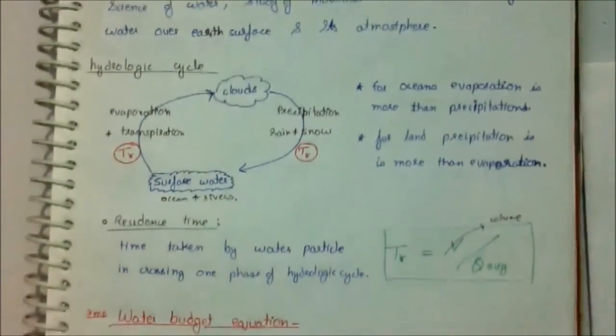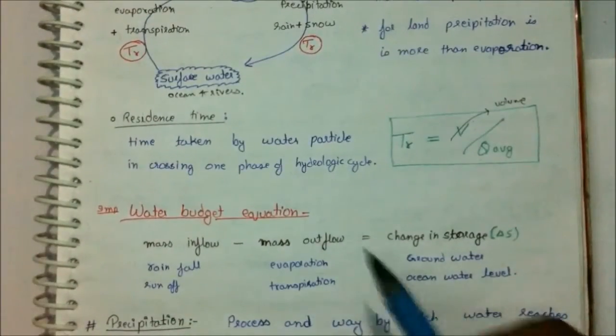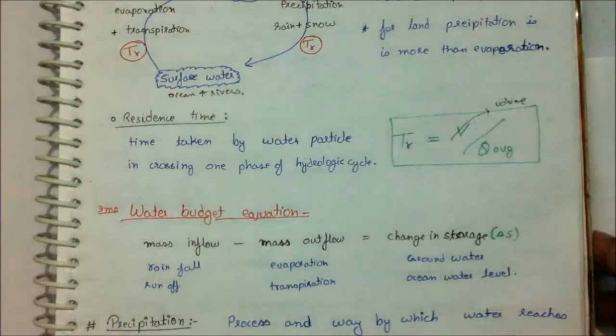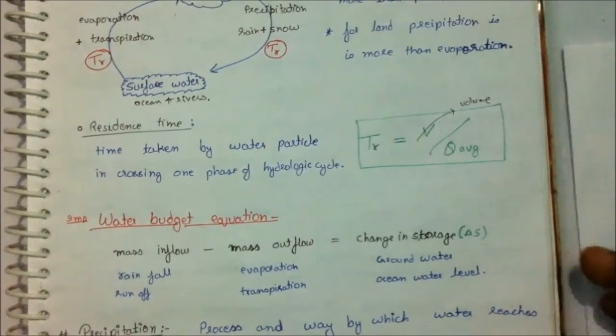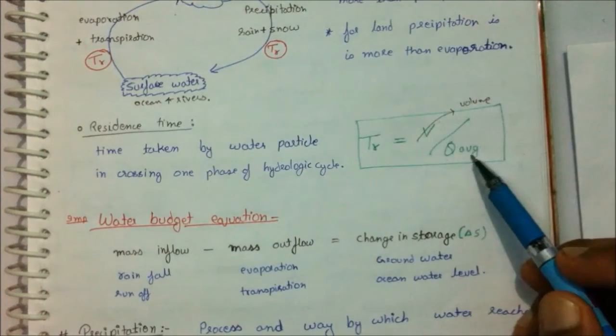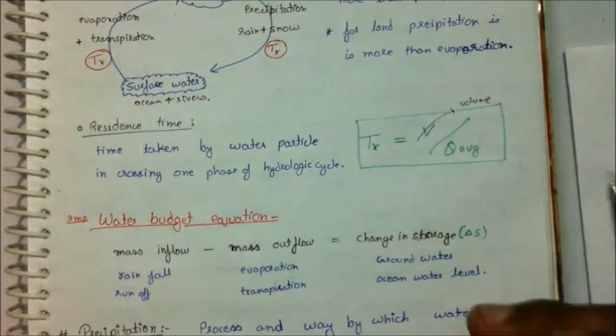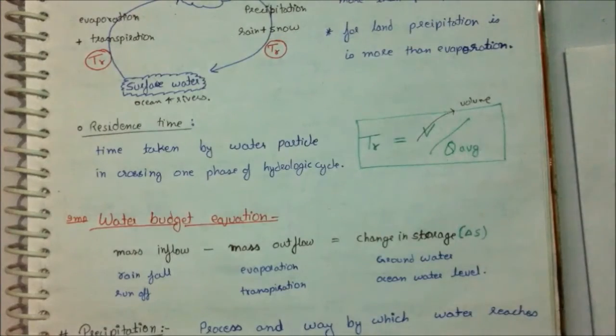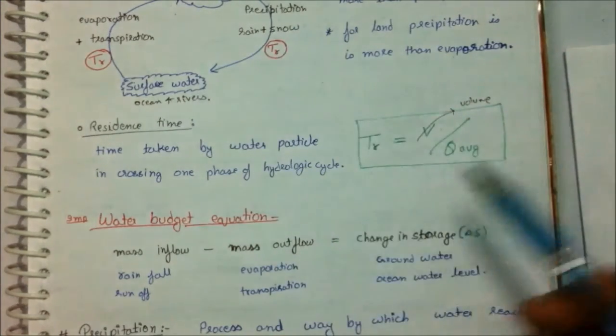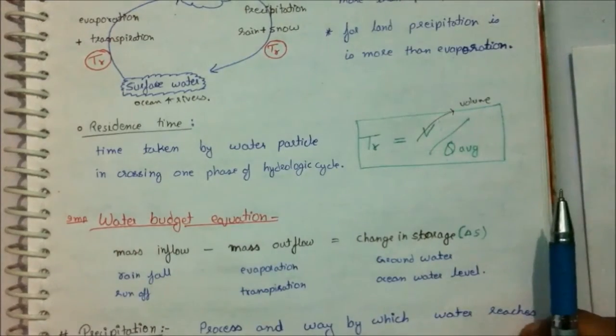Coming back to the lecture, there is a time which is also known as residence time. The time taken by water particle in crossing one phase of the hydrological cycle to another phase is known as residence time. This residence time can be denoted as tr, which is volume upon Q average. So residence time is the time taken by water from liquid phase to gaseous phase, I mean from oceans to clouds.